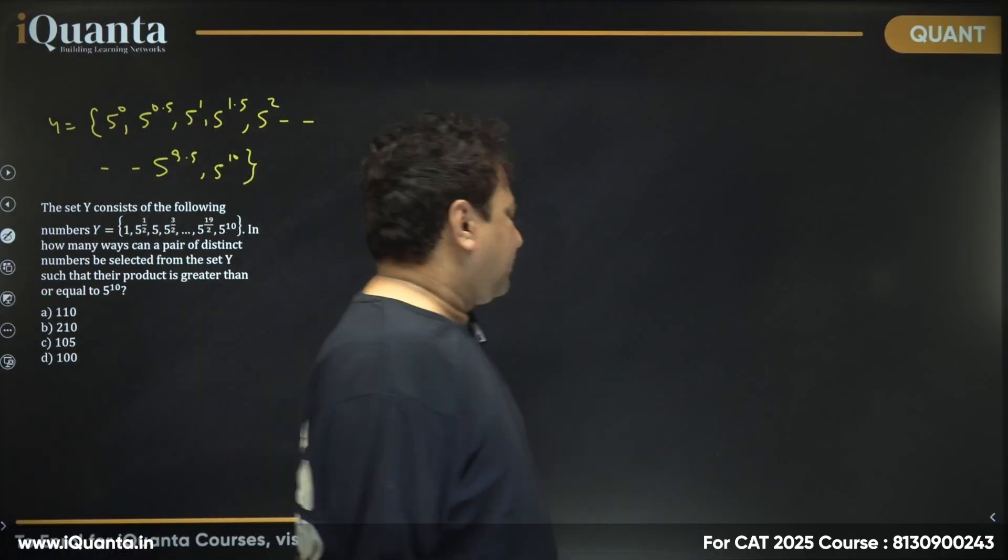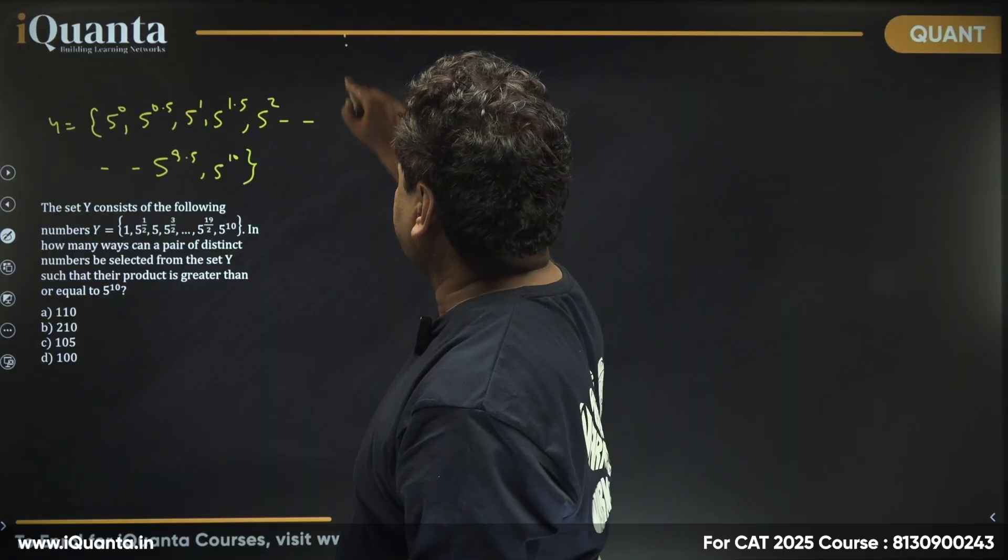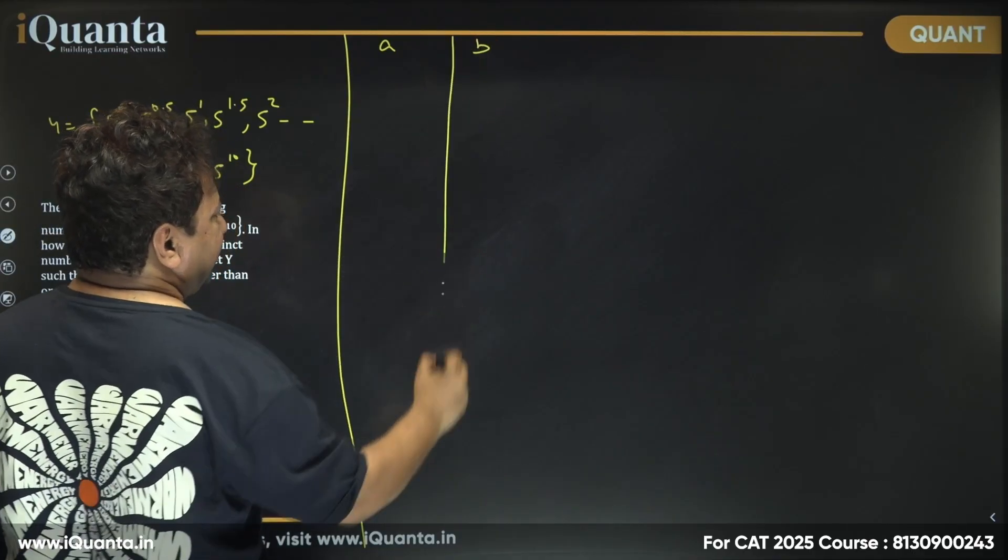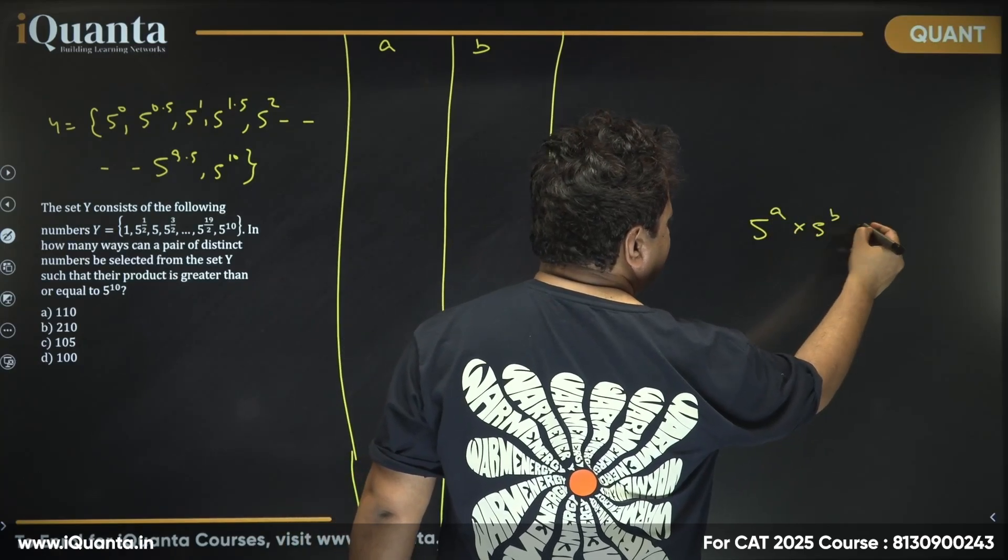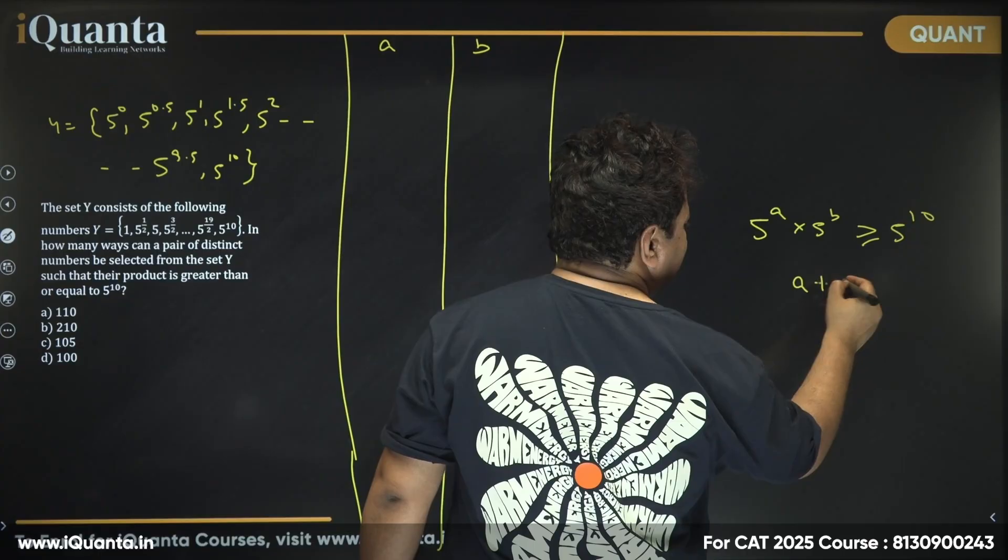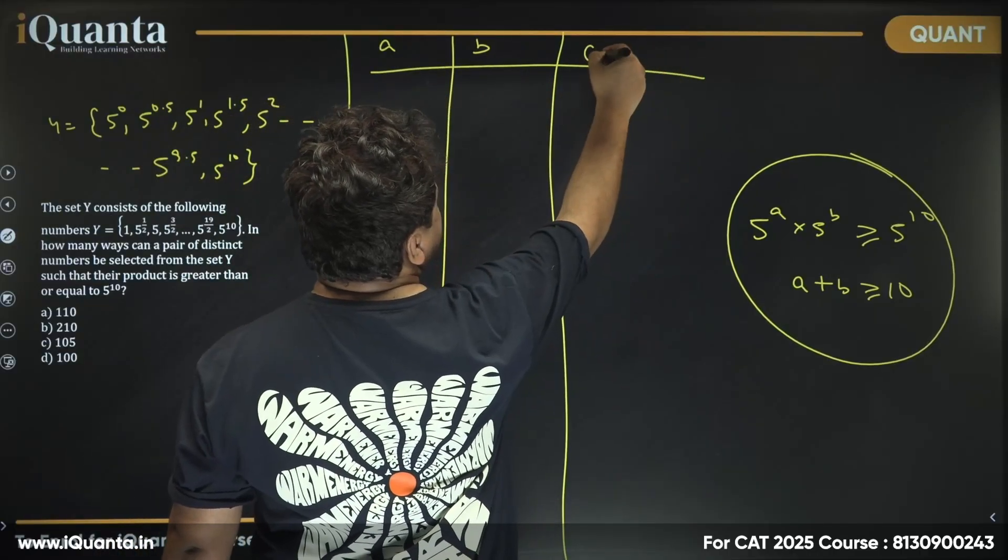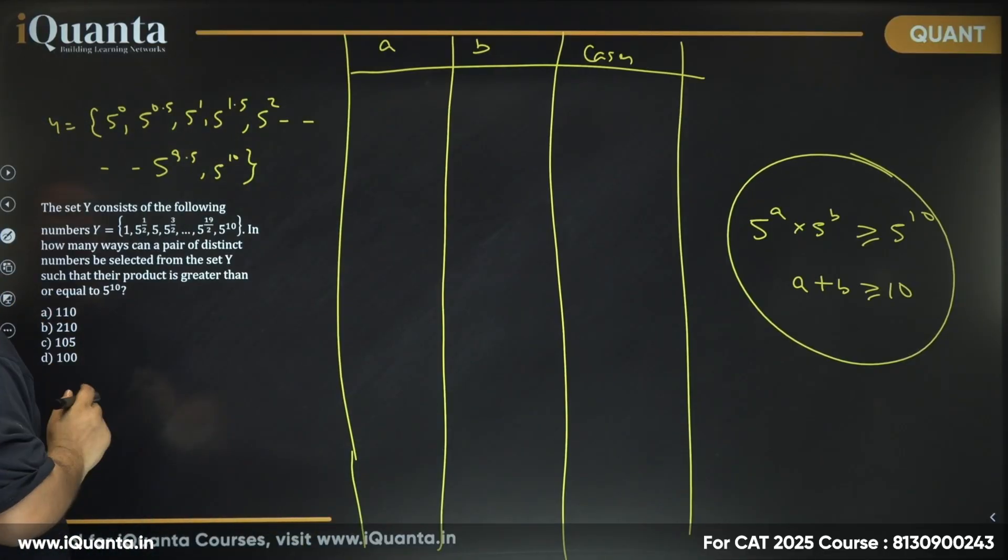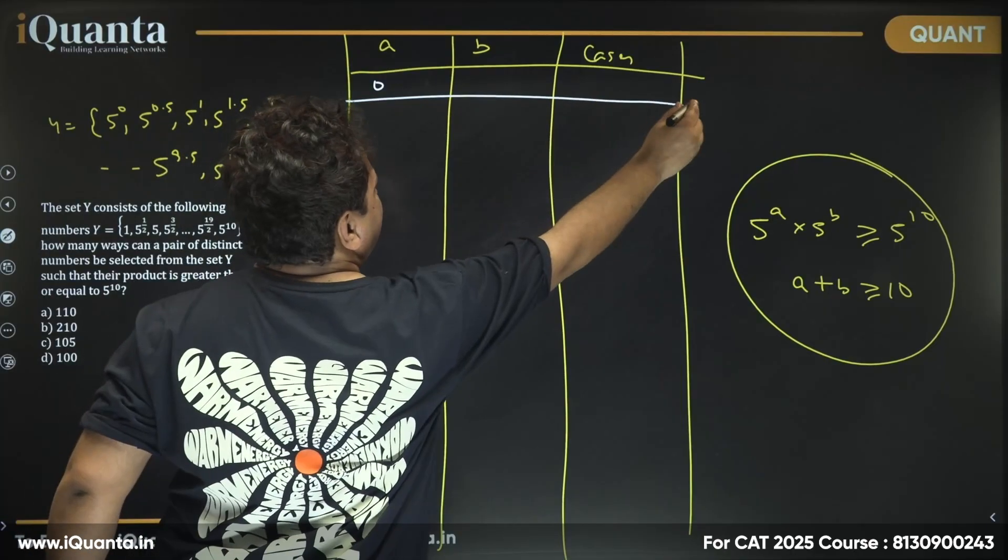Now we are not multiplying, we'll just be adding the powers and see if it exceeds 10 or not. So here I'll choose the values a, here the values b. This is 5^a times 5^b greater than or equal to 5^10, which also means a + b must be greater than or equal to 10. That is what we know. Let's put in the values here and try to find the number of cases.